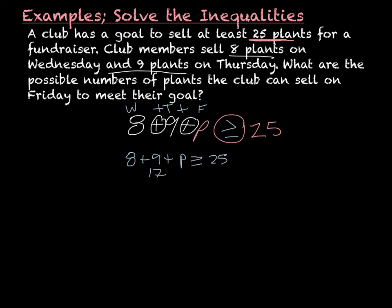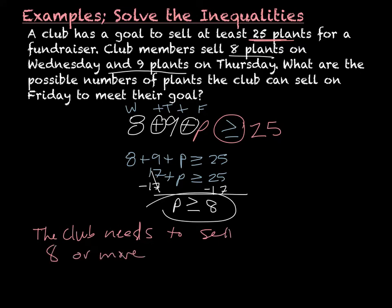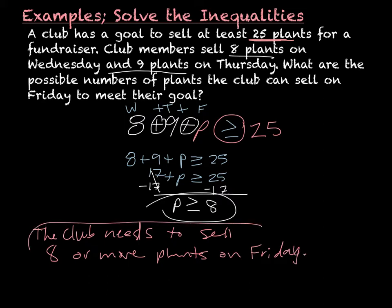Eight plus nine is 17, plus P, which is greater than or equal to 25. Subtract the 17 to solve for P, so P is greater than or equal to eight. That means the club needs to sell eight or more plants on Friday — eight or more and they meet their goal.